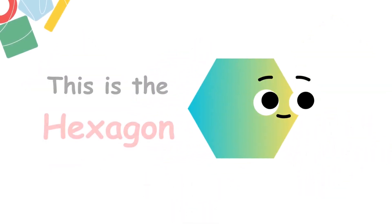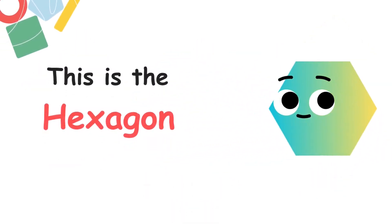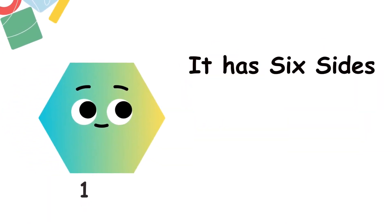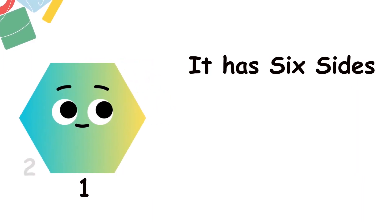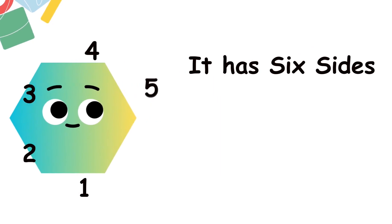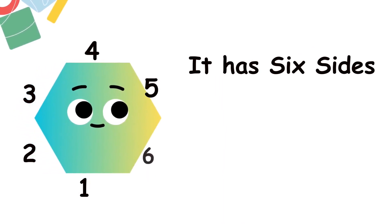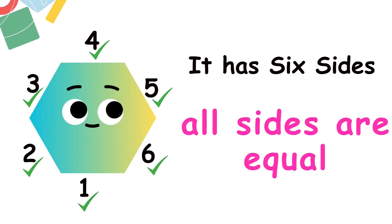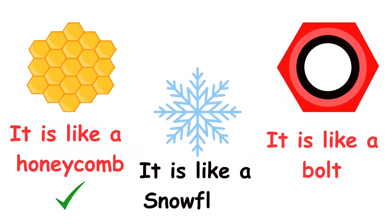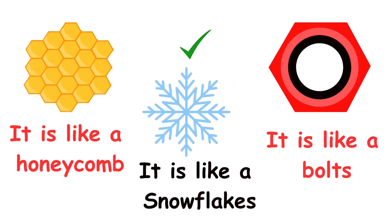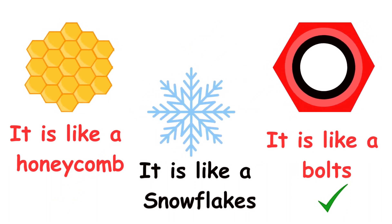This is the hexagon. It has six sides — one, two, three, four, five, six. All sides of the hexagon are equal. Its shape is similar to a honeycomb and snowflakes.